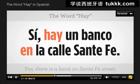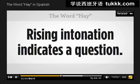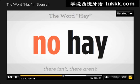Sí. Hay un banco en la calle Santa Fe — yes, there is a bank on Santa Fe Street. Now, listen to this: if I say 'hay' with a rising intonation at the end, I'm making a question — 'is there?' or 'are there?' If I'm not raising my intonation, it means 'there is' or 'there are.' And if I add 'no' at the beginning, it means 'there isn't' or 'there aren't.'